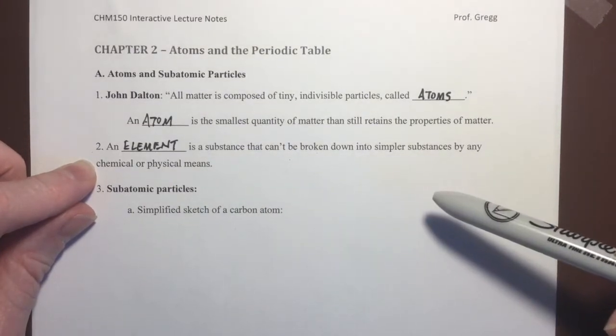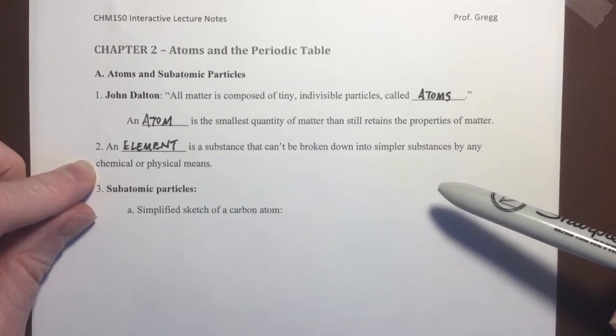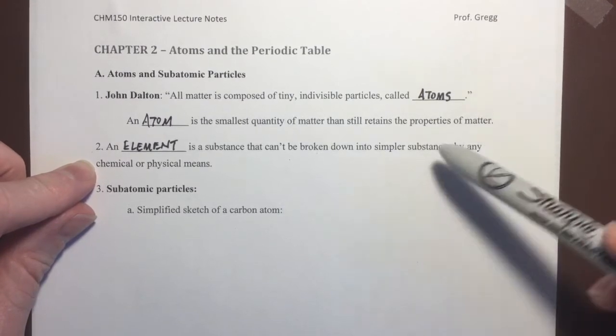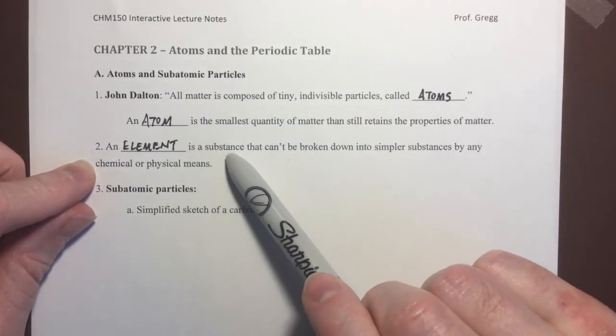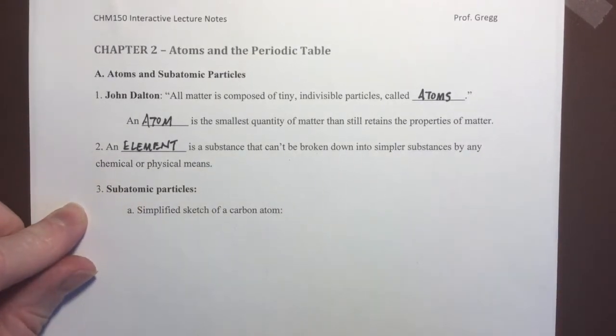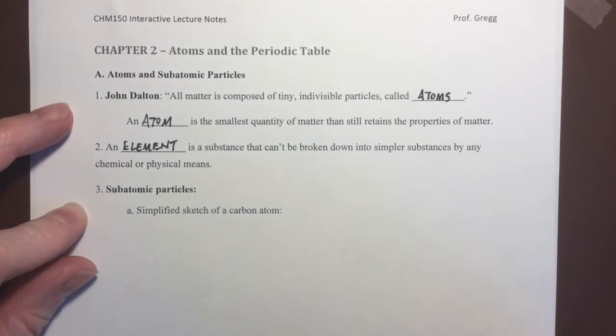For example, protons, neutrons, electrons, quarks, and so forth, they are not considered to be chemical substances. So, let's talk about these subatomic particles, the particles that are subatomic, smaller than the atom, that make up the atom.